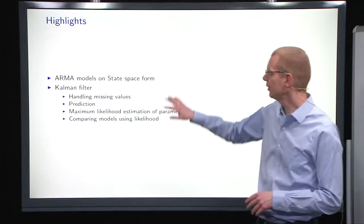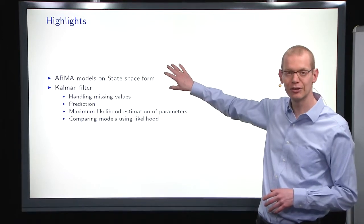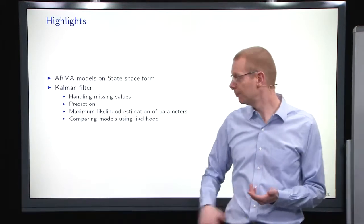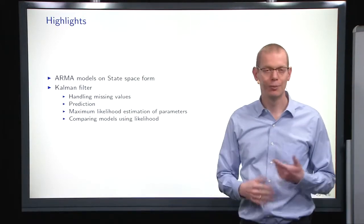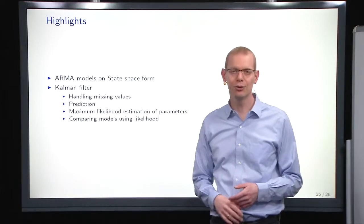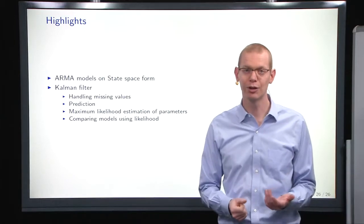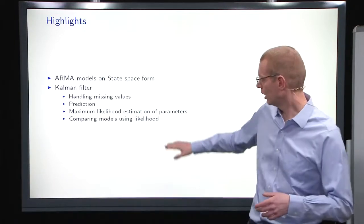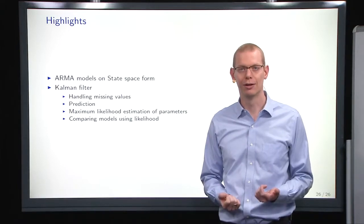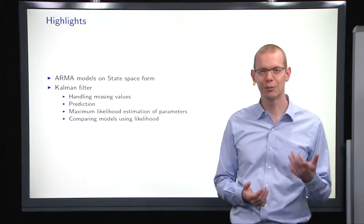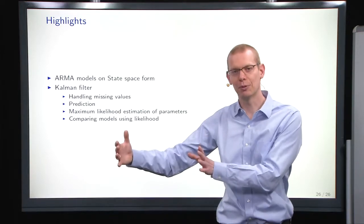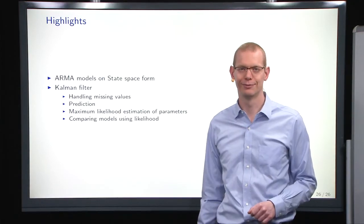To round off, basically, most important thing is, we can take any ARMA model and write it on state space form and we can use the Kalman filter both to estimate here when we have missing parameters, but also to do predictions and we can do the maximum likelihood estimation as we've done many times before. And we can again compare models using likelihood to find which one is the better model. And at the end of the day, what we care about is to find the model that is most useful for whatever system or problem that we're trying to solve.